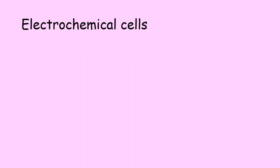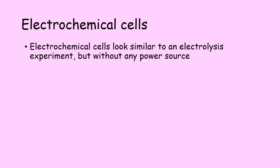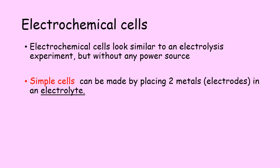There are two kinds of electrochemical cells. Electrochemical cells look similar to an electrolysis experiment. However, where an electrolysis experiment has a power source, an electrochemical cell does not need a power source. The first type of electrochemical cell is called a simple cell.